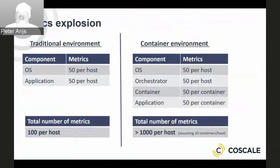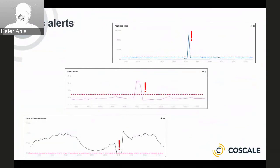To illustrate why automated techniques like anomaly detection are so important, consider the explosion in the amount of metrics to monitor when comparing a traditional monolithic application with a containerized environment. The number of containers acts as a multiplier — with 10 containers per host, you can easily have more than 1,000 metrics to monitor per host compared to 100 in a traditional environment. Multiply that by the number of hosts and it quickly becomes unmanageable, certainly if you use classic techniques such as static alerts. Static alerts work well for well-understood consolidated metrics — like number of visitors or a business metric — but not necessarily for the thousands of metrics coming from containers and microservices.